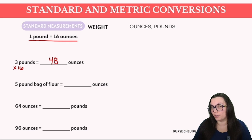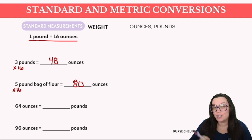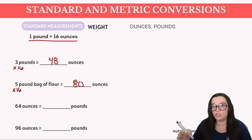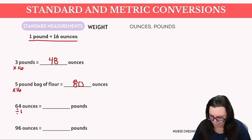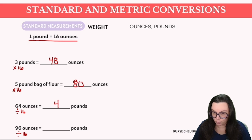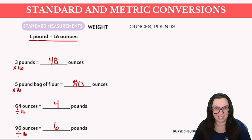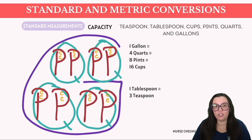For a five-pound bag of flour converted to ounces, we multiply five by 16, which equals 80 ounces. For the reverse — going from ounces to pounds — we divide by 16. So 64 ounces divided by 16 equals four pounds, and 96 ounces divided by 16 equals six pounds.